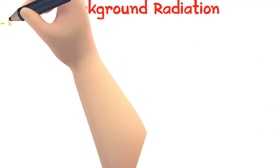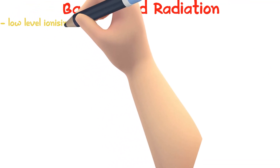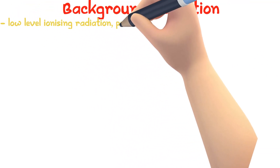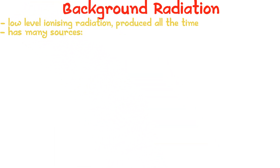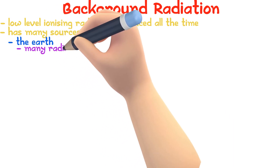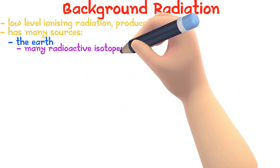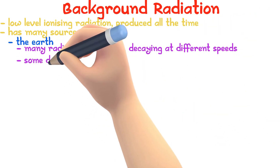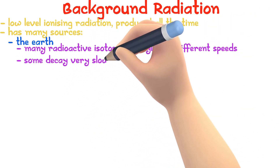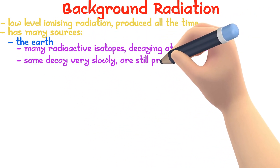Background radiation is low level ionizing radiation that is produced all the time. This radiation has many sources. One of these sources is the earth. When earth formed 4.5 billion years ago, there were many radioactive isotopes which decayed at different speeds. Some decay very slowly and are still producing radiation.